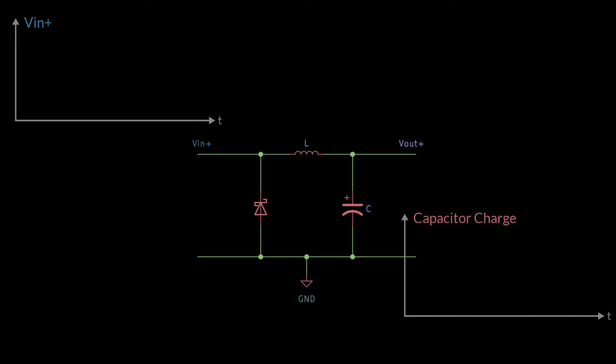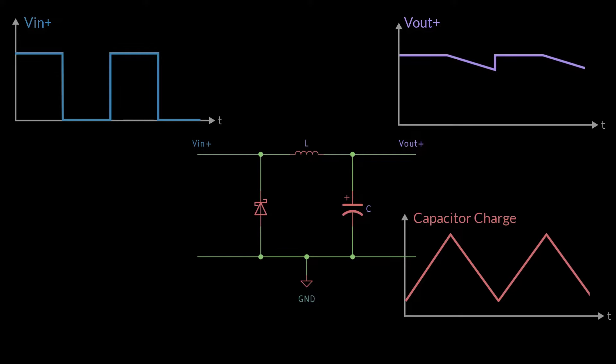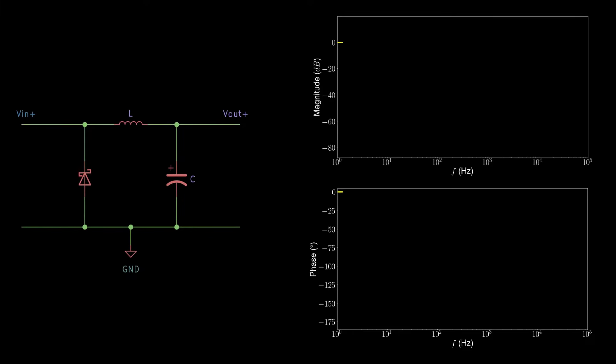An LC filter works by storing charge in the capacitor when the voltage is high, and then releases it when the voltage is low. This smooths out the voltage curve. An LC filter can be understood through a Bode diagram, which shows the gain of the LC filter as a function of frequency. Here's the Bode plot for a 330 microhenry inductor and a 100 microfarad capacitor, connected to a 10 ohm load.